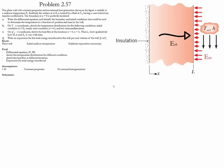The last part of the problem asks us to write an expression for the total energy transfer to the wall per unit volume. We write the energy going in by taking the integral over time from 0 to infinity of the convection energy. The convection energy is h times [T∞ minus T at the surface] times the surface area dT. Taking the constants h and As out of the integral gives: h·As times the integral from 0 to ∞ of [T∞ − T(L,t)] dt.